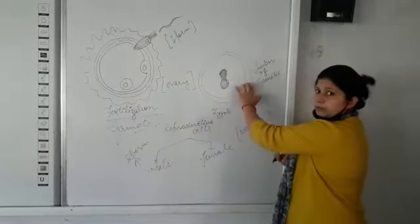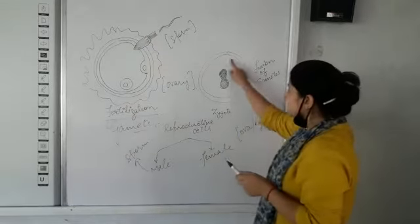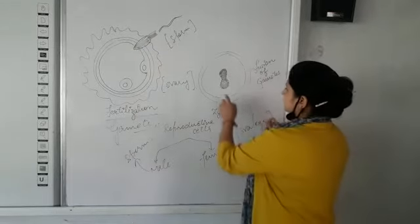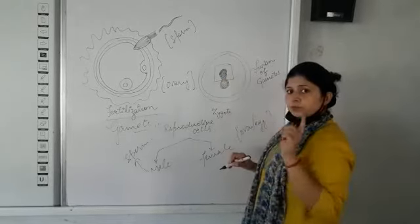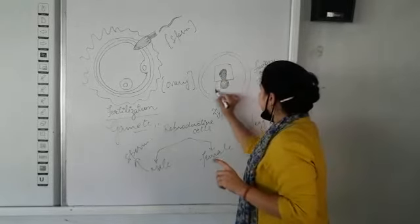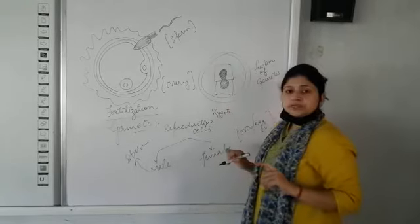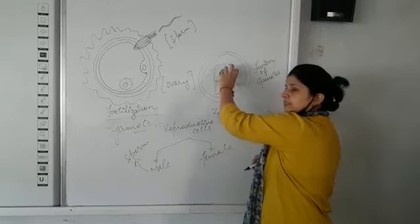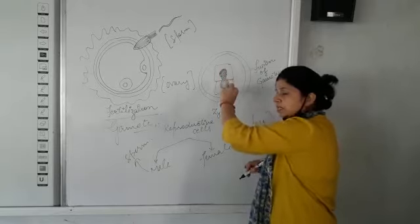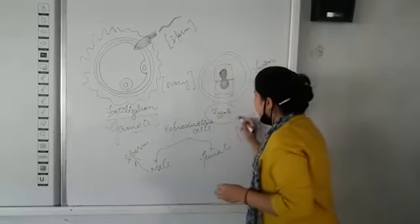Now come to the next diagram. You can see here the nucleus from one reproductive cell mixing with the nucleus of the second reproductive cell. As soon as they fuse and mix, a zygote is formed.